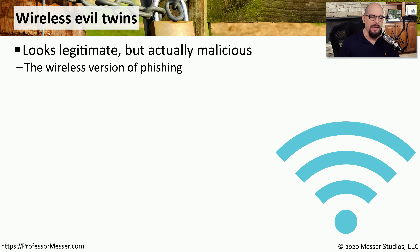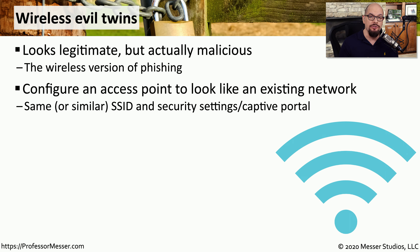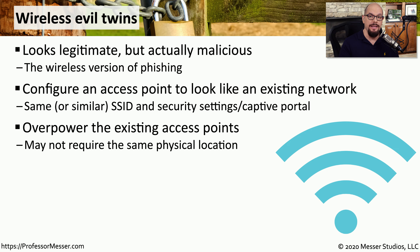A more sinister type of rogue access point is a wireless evil twin. This is an access point that is designed to look exactly like the access points that are already on your network, but they were put there for a malicious reason. This is usually an attacker trying to get your users to connect to their access point by using a similar SSID name, similar configuration settings, or putting the access point in an area where your users might happen to be. If the attacker manages to get the wireless evil twin installed somewhere close by, that evil twin could overpower the signal from the other access points and become the primary access point on the network.